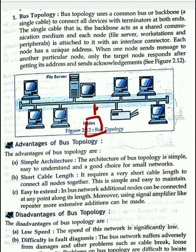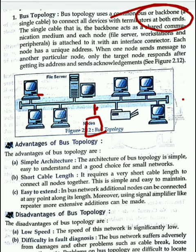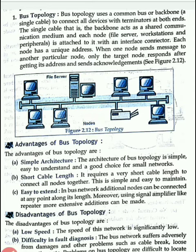Easy to extend means you can easily add nodes. The disadvantage is that if the backbone fails, then the whole network will go down. The backbone is the main part. The speed is also low. And it is difficult to diagnose faults — you need to check each part to find which computer has failed.